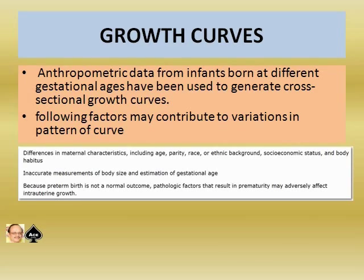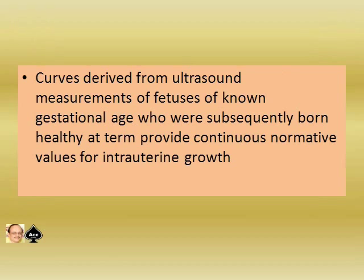Regarding growth curves: anthropometric data from infants born at different gestational ages have been used to generate cross-sectional growth curves. Factors contributing to variations in the pattern of the curve include differences in maternal characteristics such as age, parity, race or ethnic background, socioeconomic status, and body habitus; inaccurate measurements of body size and estimation of gestational age; and because preterm birth is not a normal outcome, pathologic factors that result in prematurity may adversely affect intrauterine growth. Curves derived from ultrasound measurements of fetuses of known gestational age who were subsequently born healthy at term provide continuous normative values for intrauterine growth.